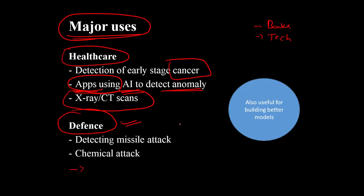Anomaly detection is heavily used in defense — detecting missile attacks, enemy signal intrusions, cyber attacks, and chemical attacks. Internal national security depends on being able to detect this anomalous behavior. From thousands of normal cases, it could be just once that an enemy targets your country, and that needs to be detected well in advance. It's also used in banking for fraud detection and anti-money laundering, where anomalous transaction behavior is reported to authorities.